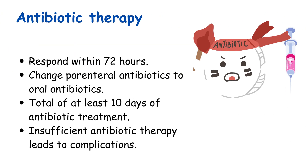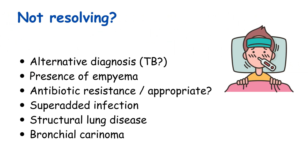Most patients with community-acquired pneumonia respond within 72 hours of initiating therapy. Parenteral antibiotics can be switched to oral antibiotics after this duration if the patient is afebrile and clinically improving. Total duration of treatment should be at least 10 days. A short duration of antibiotics runs the risk of relapse or complications such as effusion or bronchiectasis. If the patient fails to improve, consider an alternative diagnosis such as tuberculosis, or complications such as empyema. Check if the antibiotic is appropriate and think of superadded nosocomial infection. Also consider underlying structural lung disease such as bronchiectasis or bronchial carcinoma.